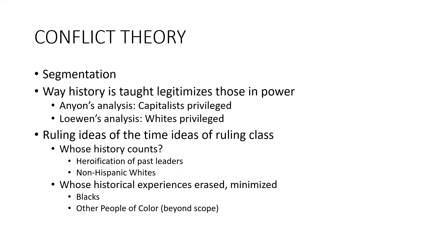Historical events can actually be reported from multiple vantage points — from each of those segments or intersections of those segments. We can tell and talk about historical events from those different vantage points, which would shape our understanding of our history. But conflict theorists point out that historical events in textbooks are often presented in a way that legitimizes those who are already in power and those who already have privilege.